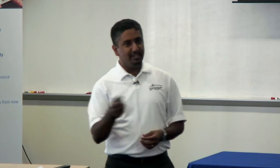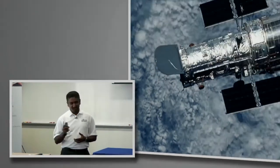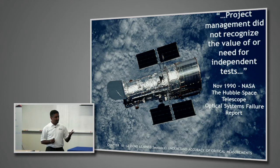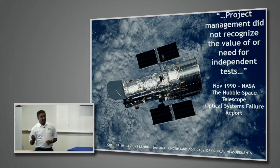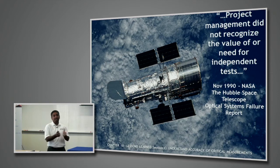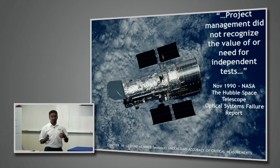How many of you know what this is a picture of? The Hubble Space Telescope. Many of you might know that there was an issue about 20 years ago, and it was documented that project management did not recognize the value of independent testing. Here is a great lesson for us to learn — it's important to do testing. But there's another aspect: it's important to do independent testing, because when we do testing, we have to make sure it is independent so that you can find the flaws.